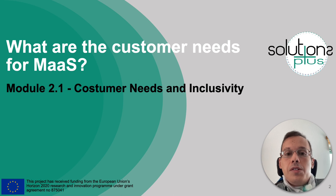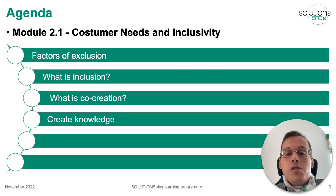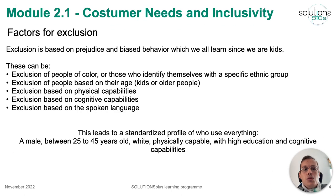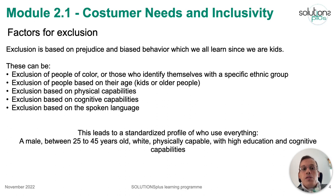We are going to talk about these topics briefly, so be ready to search about them deeply after this session. I will talk about some factors of exclusion, what is inclusion, what is co-creation and how to create knowledge from co-creation processes. To start, we are going to talk about factors for exclusion and some of the aspects that make us exclude other people based on personal views, some prejudice, and biased behaviour.